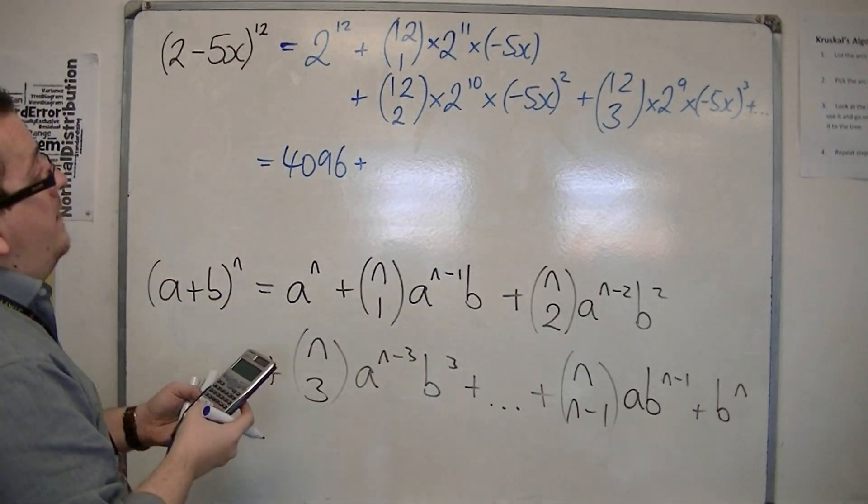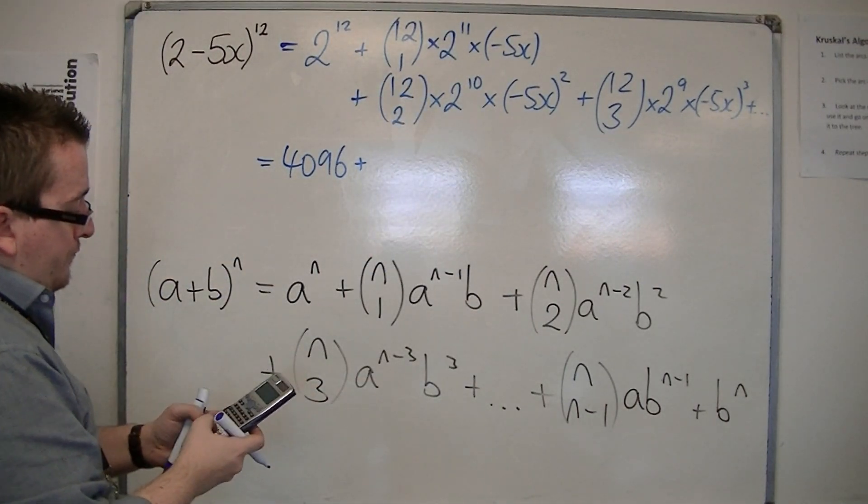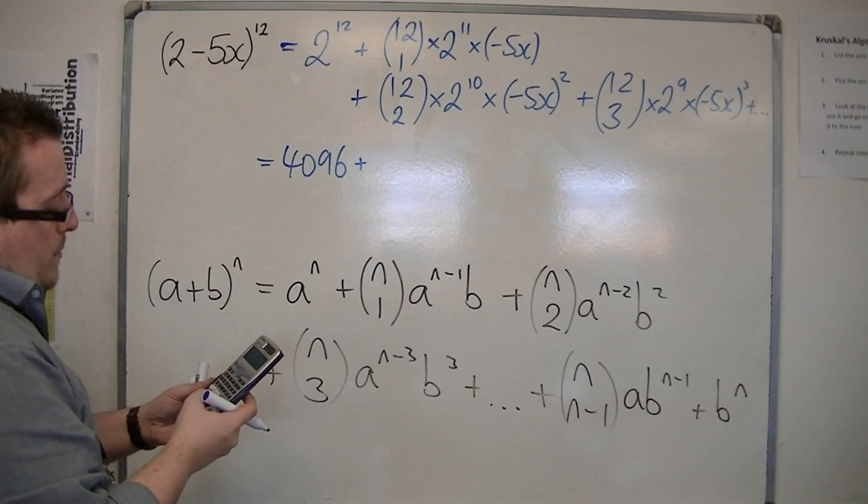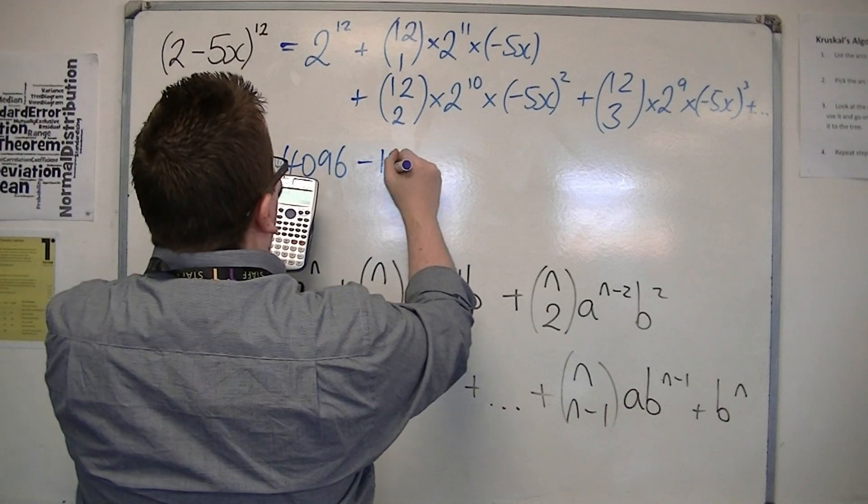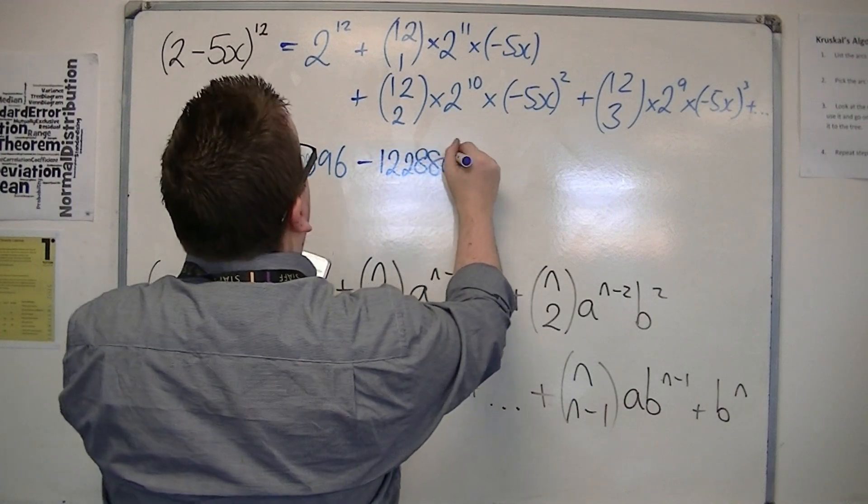We're going to multiply that with $2^{11}$. And then we're going to multiply that with minus 5. So, we've got minus 122,880x.